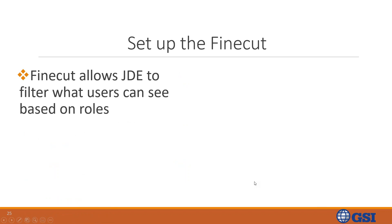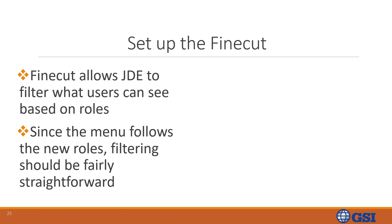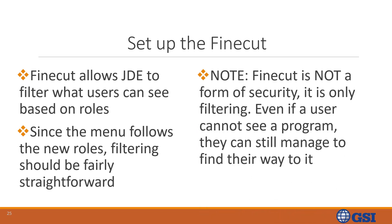Then we would set up fine cut. Fine cut allows JDE to filter what users can see based on their roles. Some JDE menus show a lot of extra options a user doesn't necessarily need — fine cutting hides those extra menus so users don't explore things they shouldn't, and it reduces confusion so they have exactly what they need. Note that fine cut is not a form of security — it is only a method of filtering. Even if a user cannot see a program, they can still find their way to it.